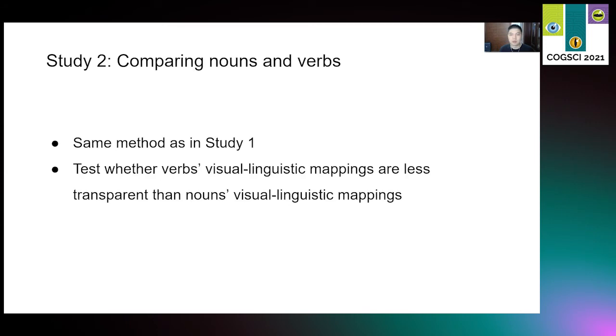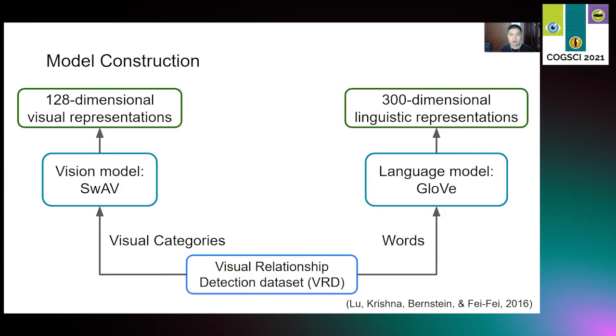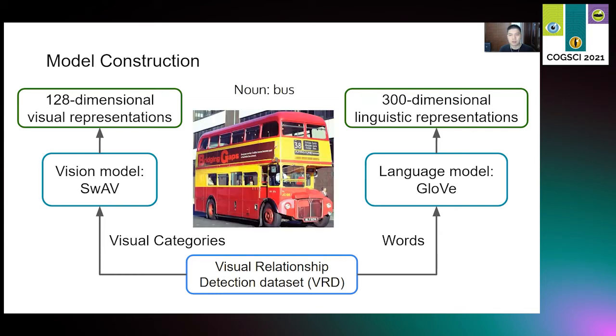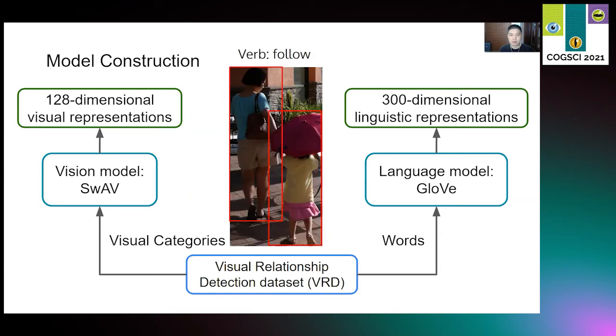So in study 2, we used the same method as in study 1 to understand whether verbs are harder to learn than nouns because their visual linguistic mappings are less transparent. The pipeline of the study is identical to study 1. Because we compare nouns with verbs, we used a new corpus called VRD that contains annotations for both nouns and verbs. VRD includes a hundred different types of nouns and 70 predicates. From these categories, we excluded two nouns for which we did not have GloVe vectors to define their linguistic representations. And for predicates, we selected the 30 that correspond to verbs, rather than, for example, prepositions. So this is an example of a picture of a noun from dataset, which is a bus. And the way we consider the border of a verb is to take the union of the bounding boxes of any agents or objects that are annotated as taking part in the verb. For example, in this picture, the bounding box for verb follow is the union of the bounding boxes of the mom and the kid.